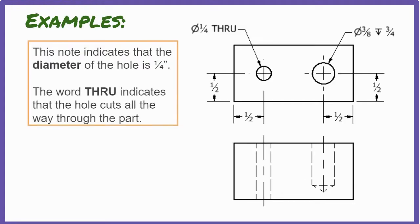This note indicates that the diameter of the hole is one quarter of an inch. The word 'through' indicates that the hole cuts all the way through the part. Normally, if no depth is given for a hole, we assume it goes all the way through the part, even if we don't see the word 'through' on the hole note.